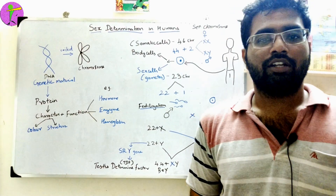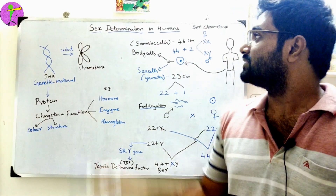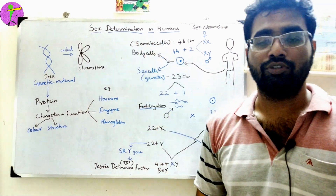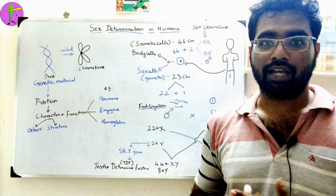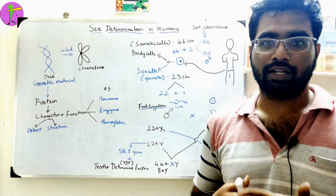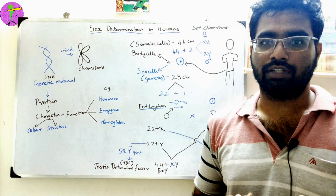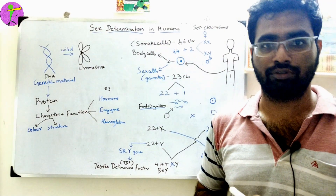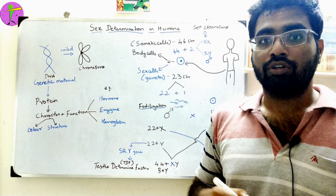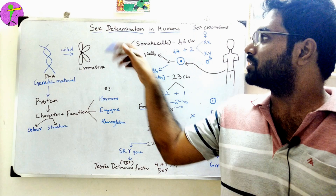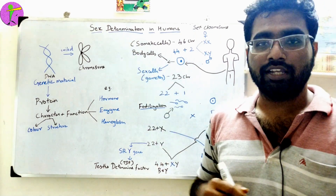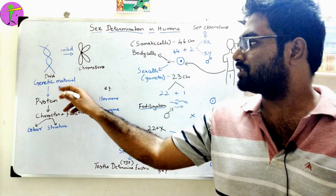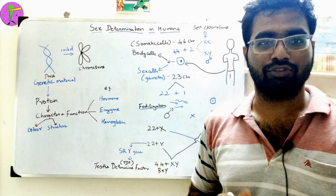So what is this topic? Let's talk about sex determination in humans. Who is doing this sex determination? The DNA. DNA is a genetic material.